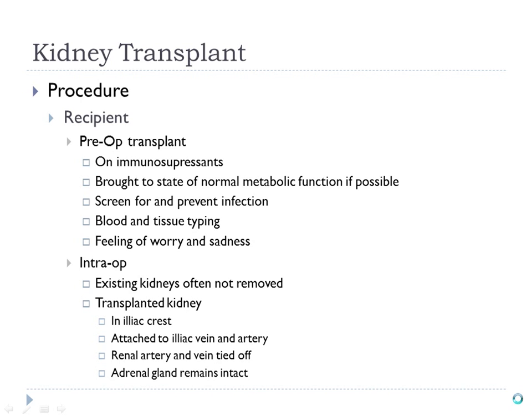When the kidney is placed in transplant, the original kidneys are left intact — not taken out, most likely. The transplanted kidney is placed in the pelvis, in the iliac crest area where it is protected. It will be attached to the iliac vein and iliac artery, not the renal arteries and veins.